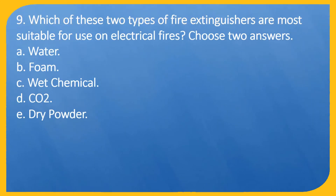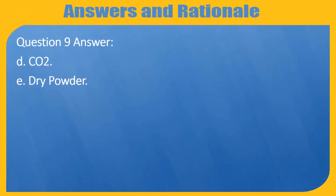Question 9. Which of these two types of fire extinguishers are most suitable for use on electrical fires? Choose two answers. A. Water. B. Foam. C. Wet chemical. D. CO2. E. Dry powder. Question 9 answer: D.